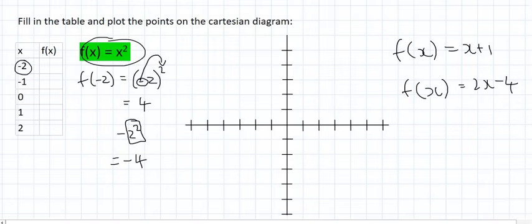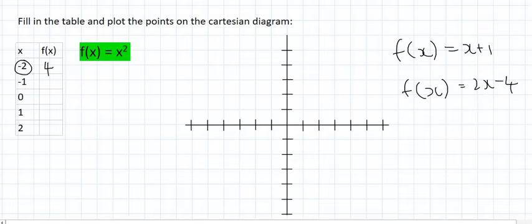So to summarize, in math when you substitute something in, use a bracket. Now we're going to plug minus 1 in, so that's f of minus 1, which gives us minus 1 squared, and minus 1 times minus 1 is 1. Then the next one is plugging in x as 0, so f of 0 equals 0 squared, and 0 squared is just 0.